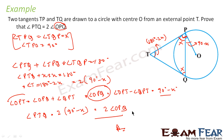In summary, we assumed angles TPQ and TQP to be x each, then found the value of angle T and angle OPQ in terms of x, and then showed that the relation holds.